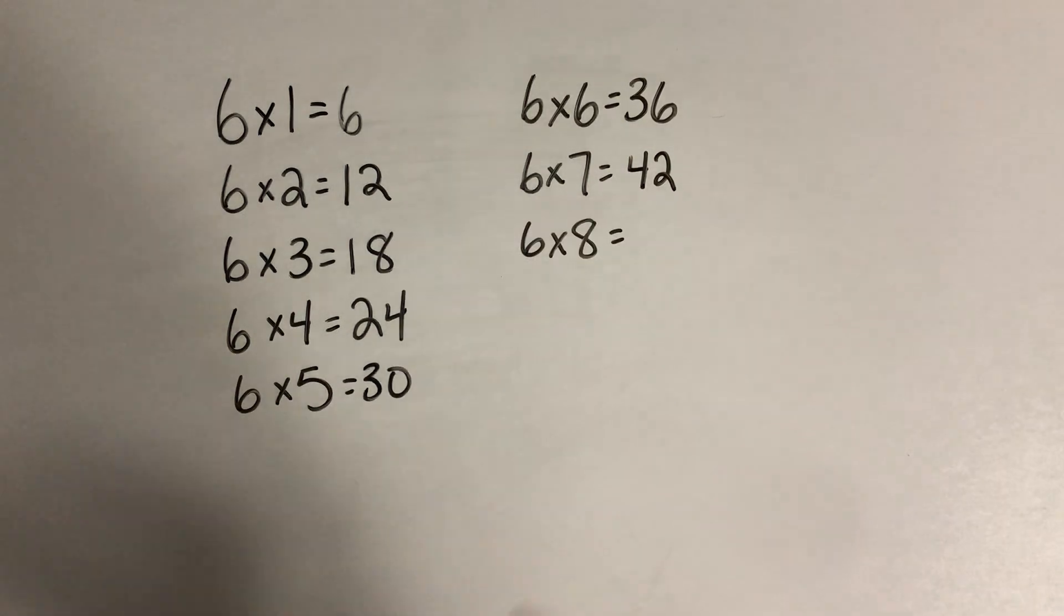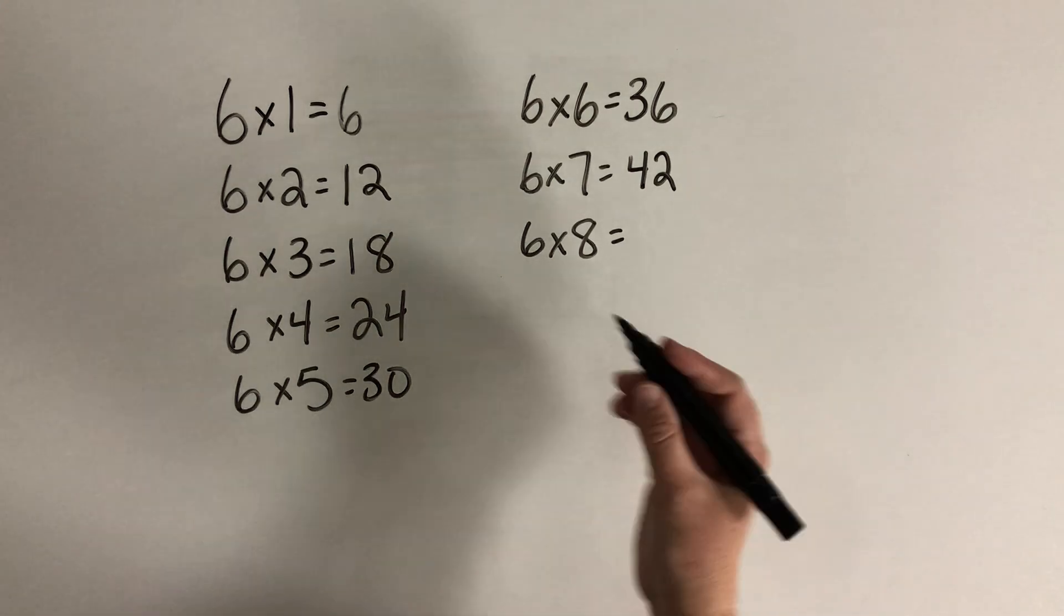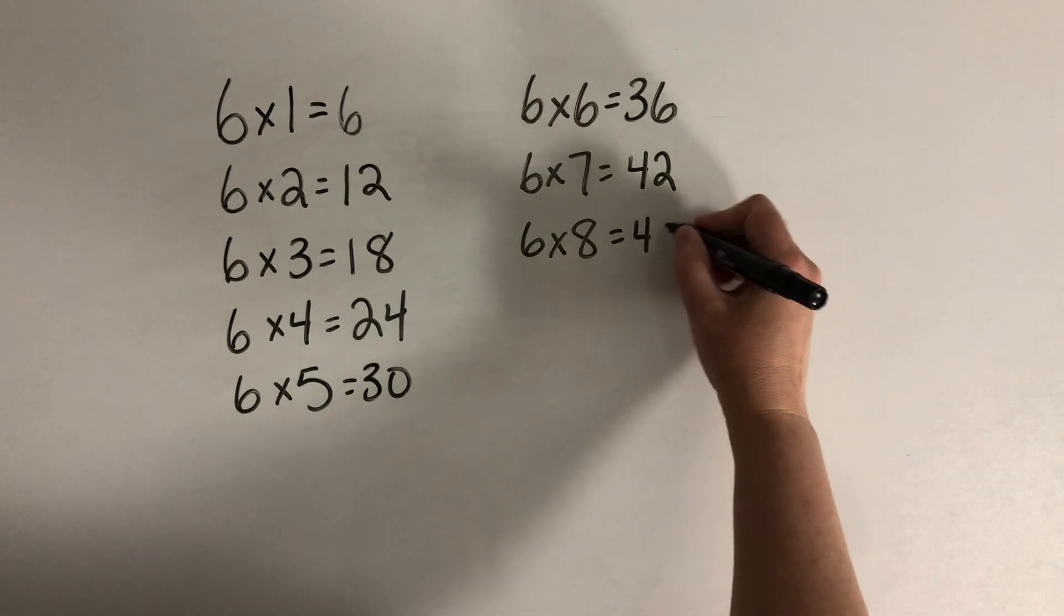For 6 times 8. How could I solve 6 times 8? Well, maybe I know that 5 groups of 8 makes 40. And then I'll just add one more group of 8 to make 48.